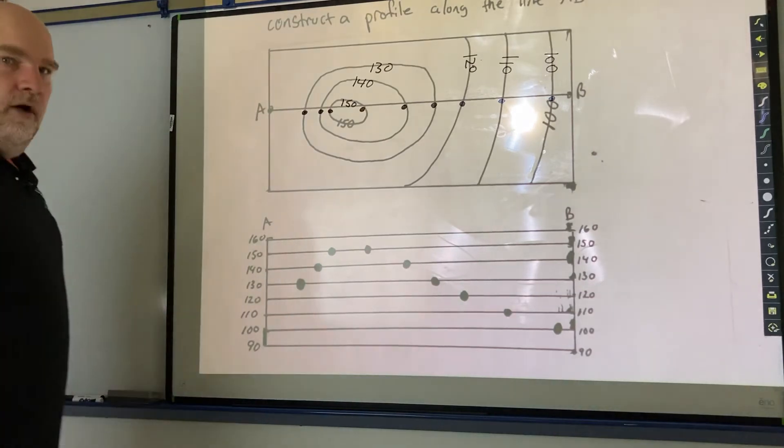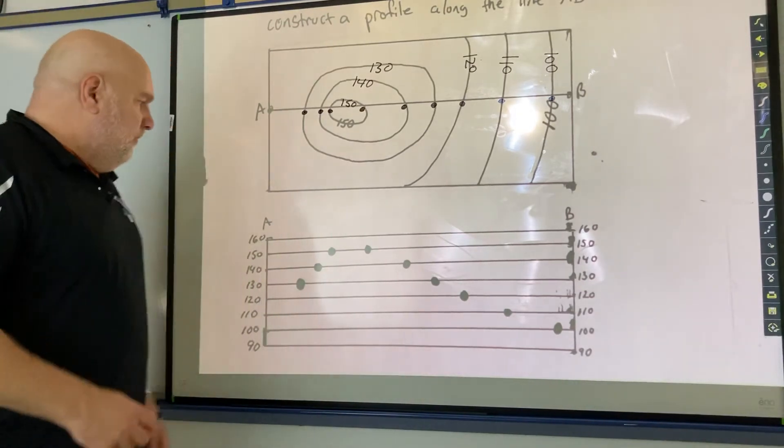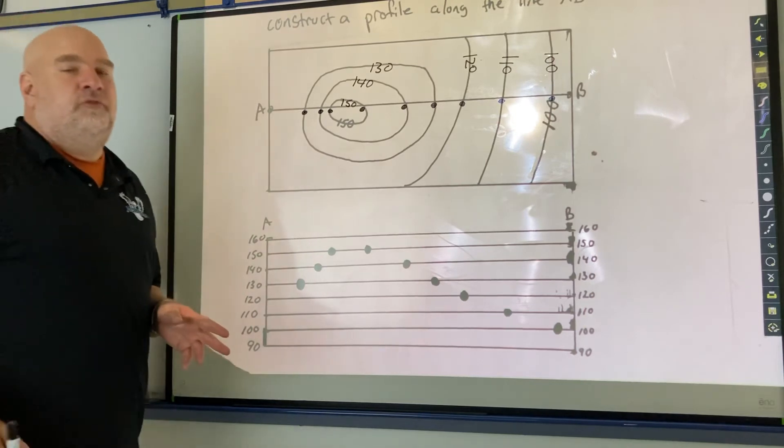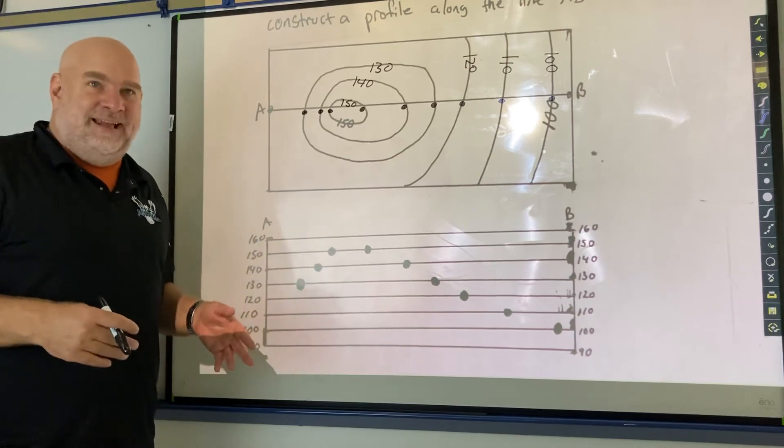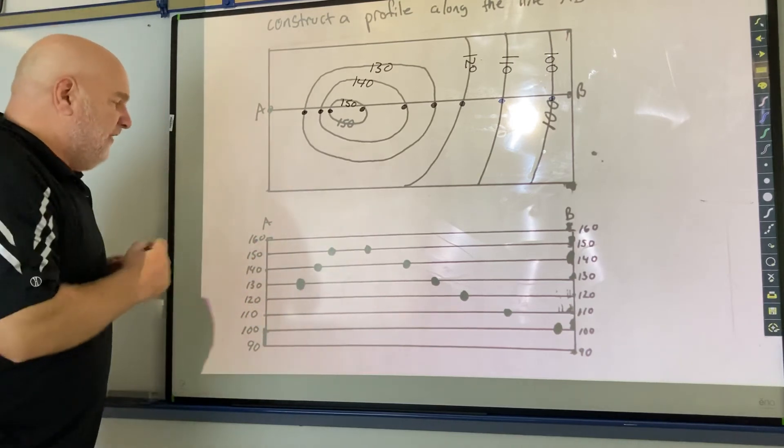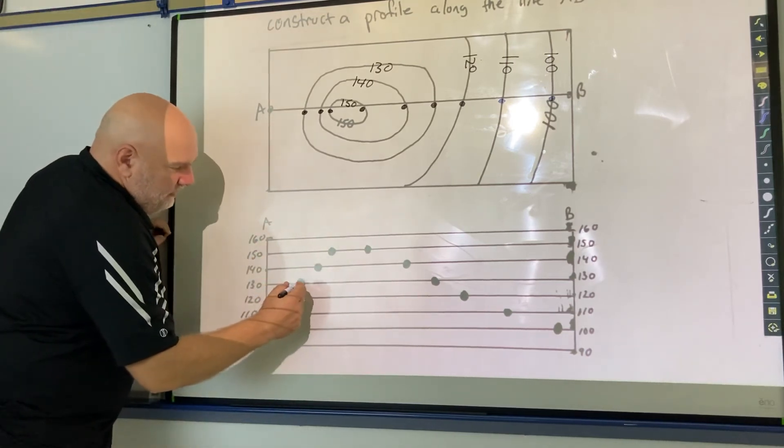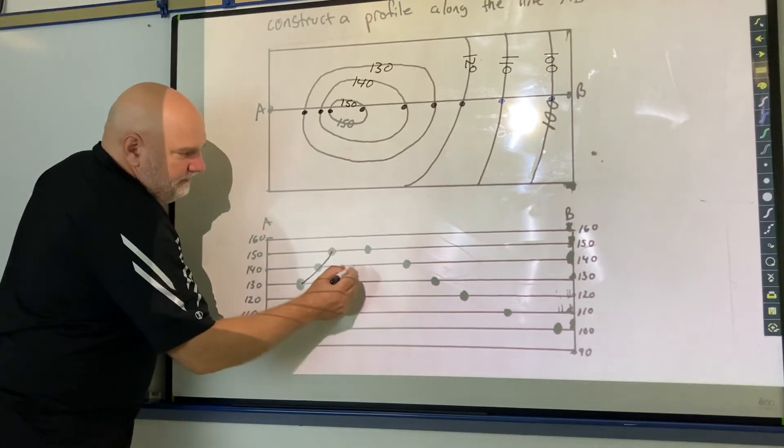All right, so what I can do now is draw a line. Now you're just going to do it freehand. You don't want to do it with a ruler because this is supposed to represent land and the land's not going to be perfectly flat. So I'm going to connect those.